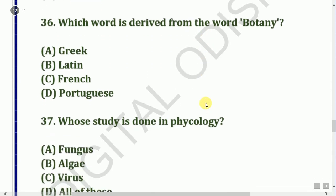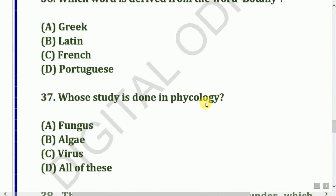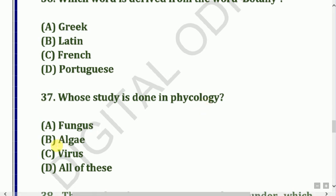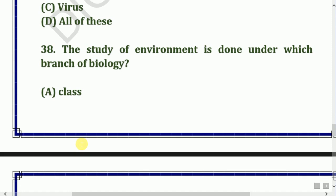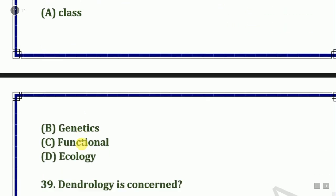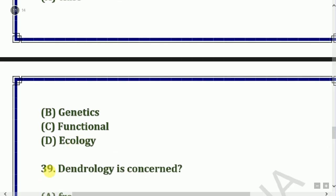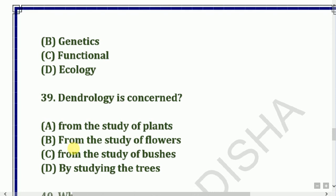Next question: Whose study is done in psychology? The study of the environment is done under which branch of biology? The answer relates to ecology. The study of trees is called dendrology.